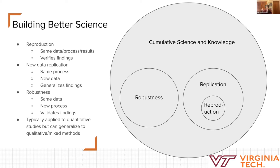New data replication — a bigger subset of replication, just as reproduction is — uses the same processes again but a different set of data. It might be a different subset of the original, a different time, a different context, anything like that.